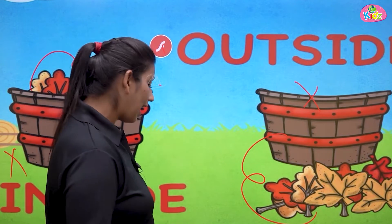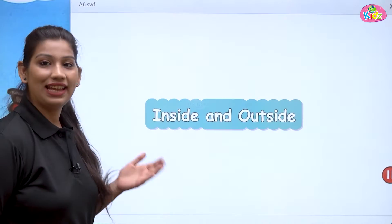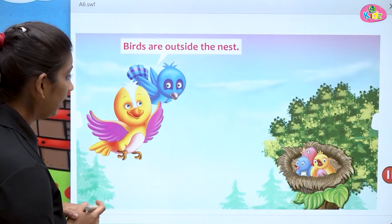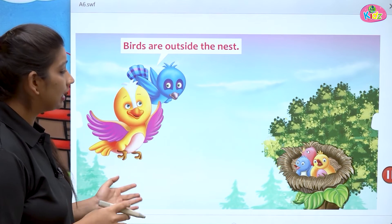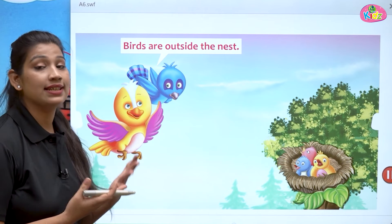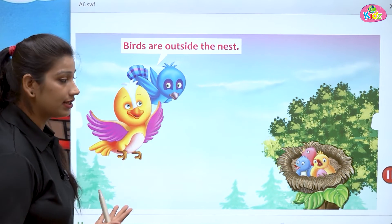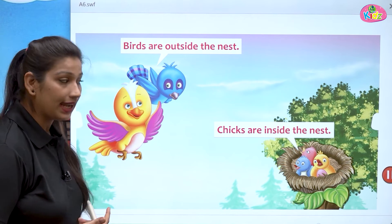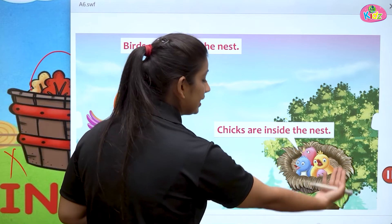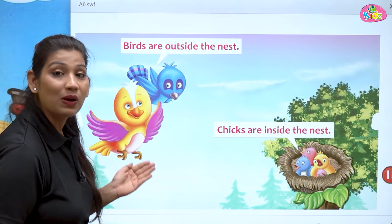Let us understand the concept more easily through a video. Inside, outside. Here we can see in the picture — birds. Some birds are inside the nest and some birds are outside the nest. Here is a tree, here is the nest, and these birds are outside the nest.